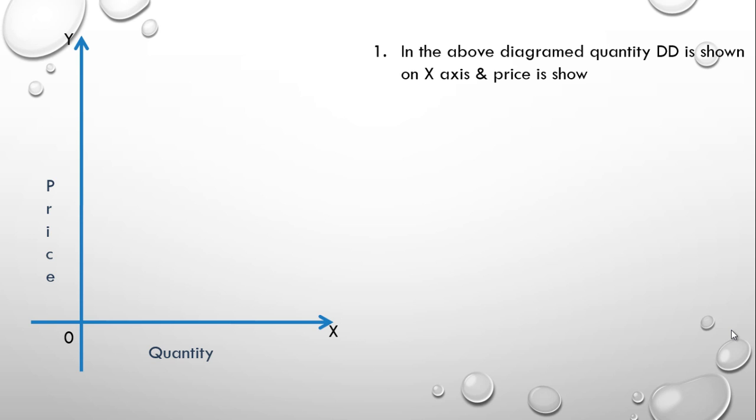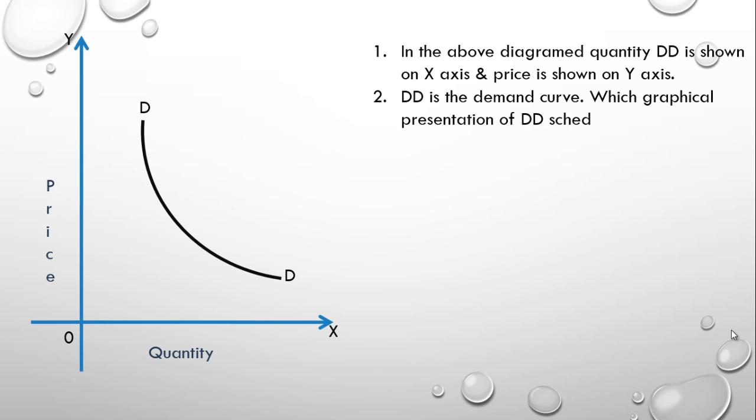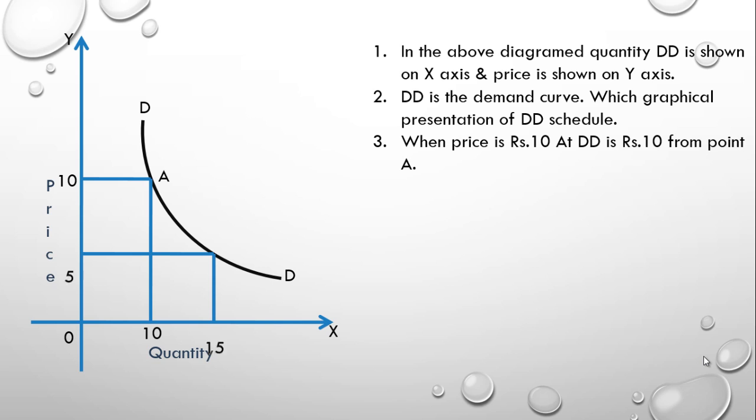Now what is this? It's a demand curve and I'll give a name DD. Let us write down something about it also. DD is the demand curve which is a graphical presentation of demand schedule sloping downward from left to right. Now I am taking a particular point A. At that point the price is 10 and quantity is also 10. Now let us write something about it. When price is rupees 10, at this demand is 10 from point A. Now next point will be 5 and 10. When the price will decrease from 10 to 5, the demand will increase from 10 to 15 at point B.